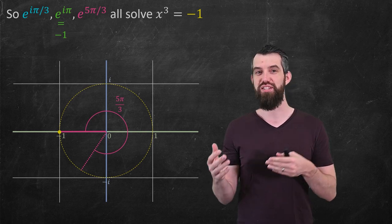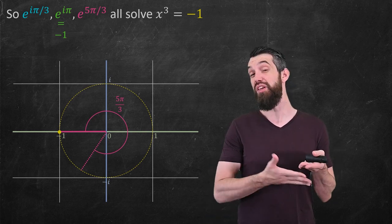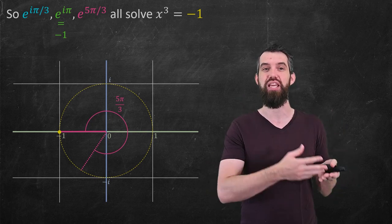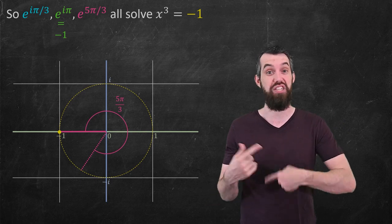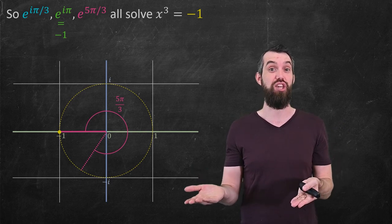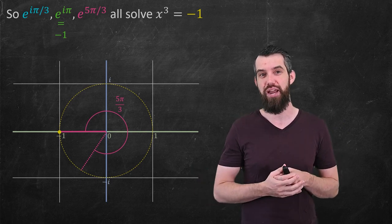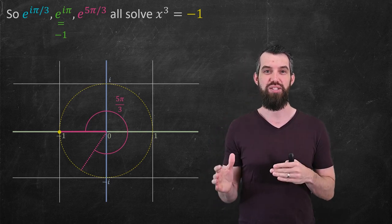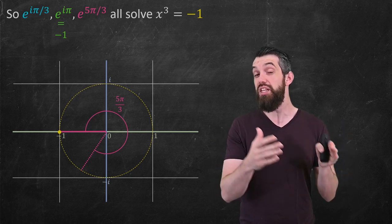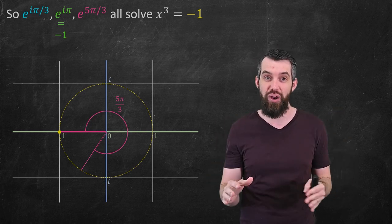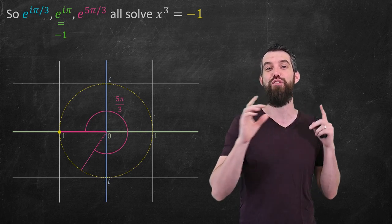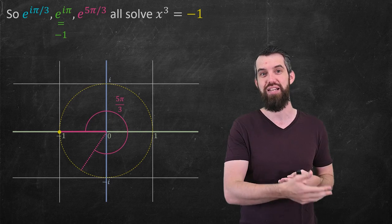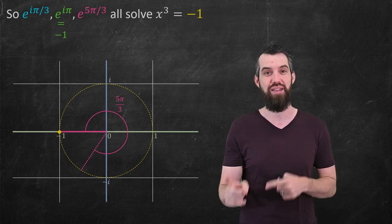If you want to challenge yourself with another example, try the cube root of i — find algebraically the solutions, and geometrically predict where they should lie to cube out to the value of i. That is polar form for complex numbers. If you have any questions about this video, leave them in the comments below. If you enjoyed the video or found it useful, give it a like for the YouTube algorithm — we're all mathematicians here, we appreciate algorithms just like YouTube does, and we'll do some more math in the next video.